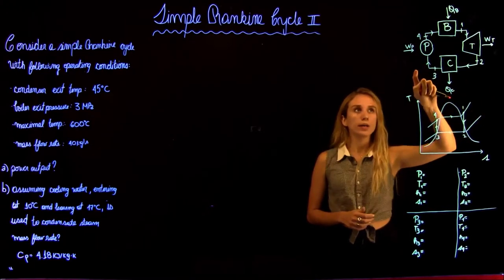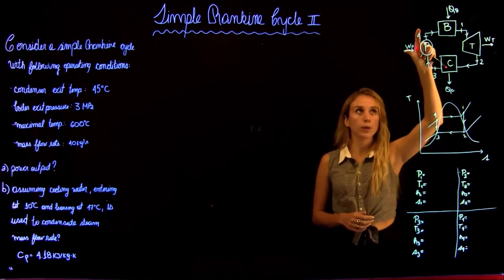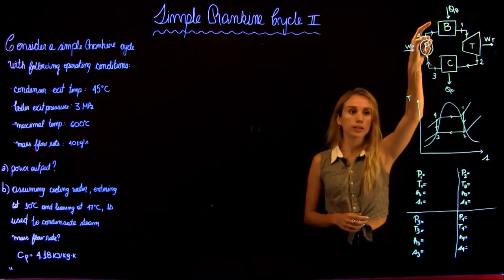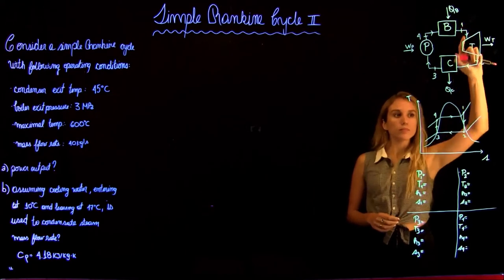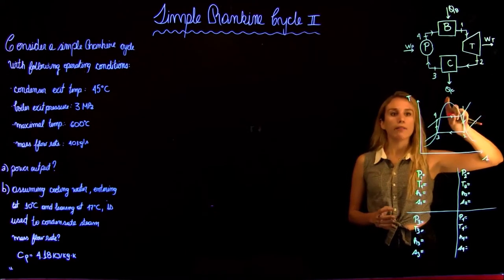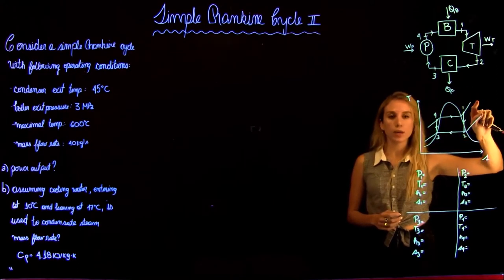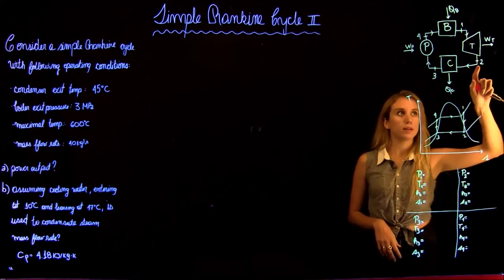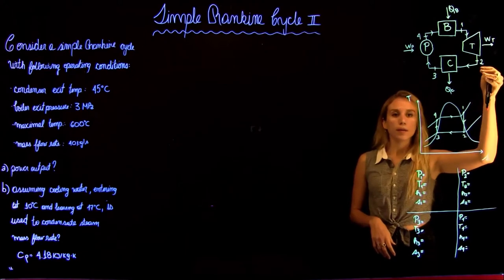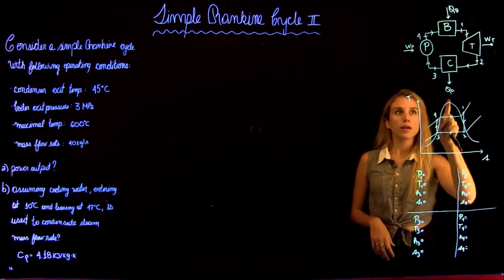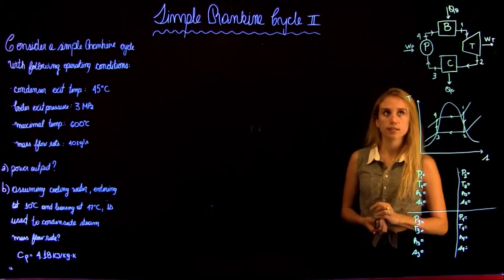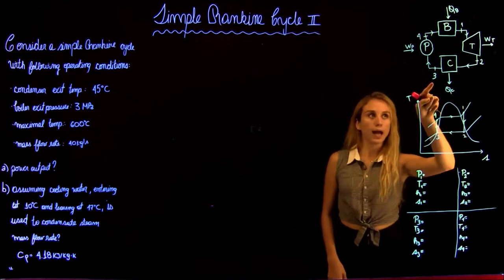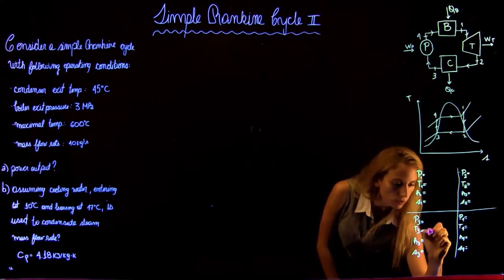We have liquid entering the pump where it's going to get compressed, going from the low to the high pressure. The compressed fluid is going to get heated up in the boiler to state 1, where we're going to have a phase change — so here we are in the superheated phase. Then the steam is going to enter the turbine, expand into state 2, and then enter the condenser and be converted back into liquid at state 3. We are given a condenser exit temperature of 45 degrees Celsius, so T3 = 45°C.